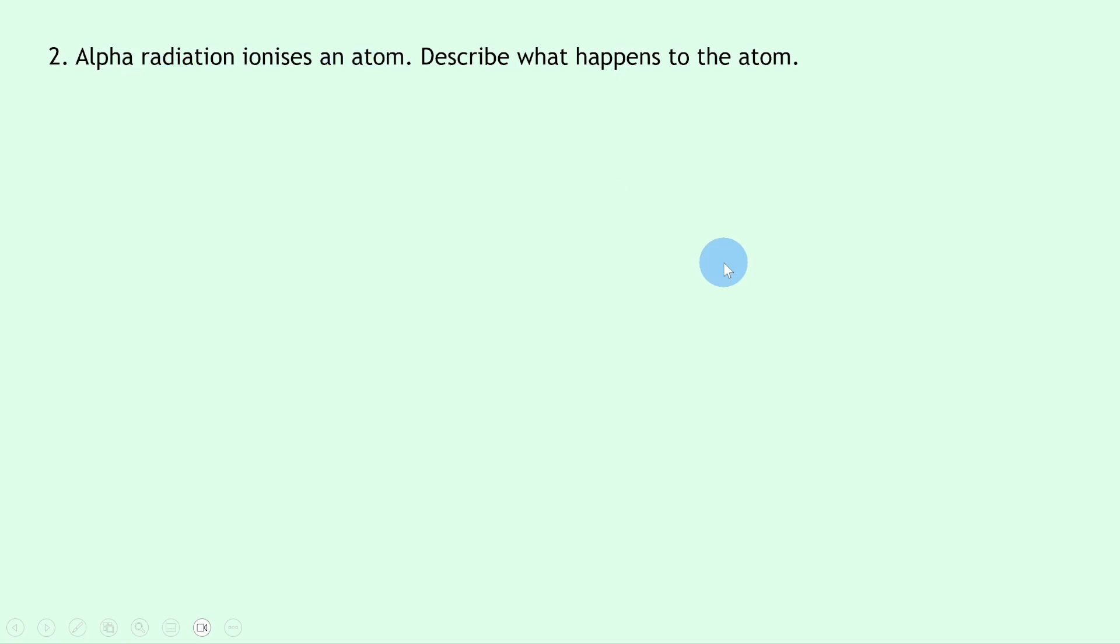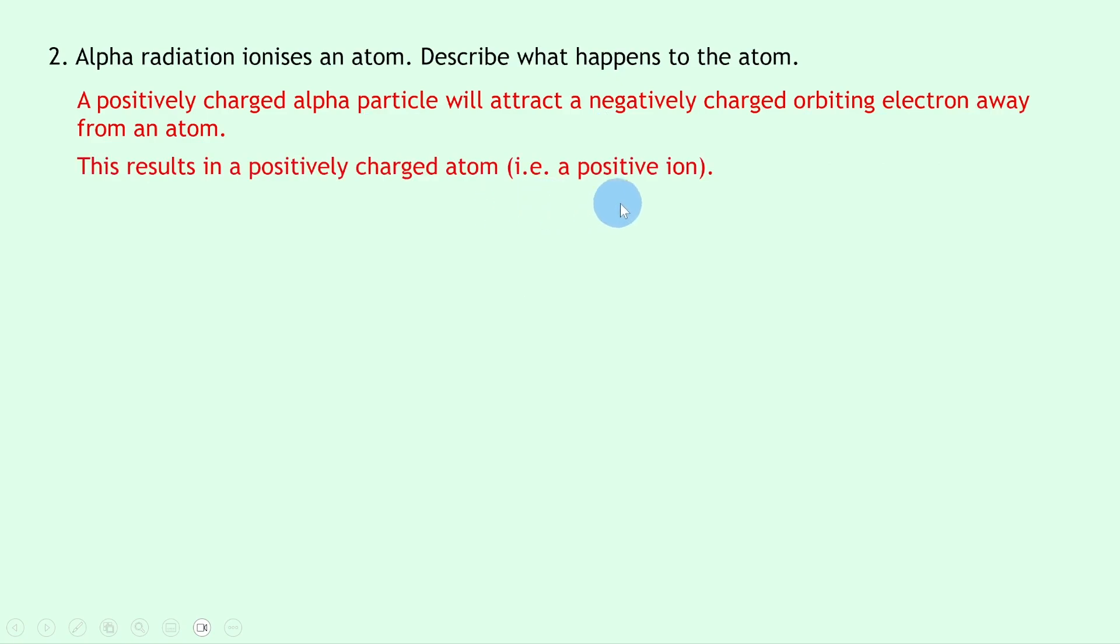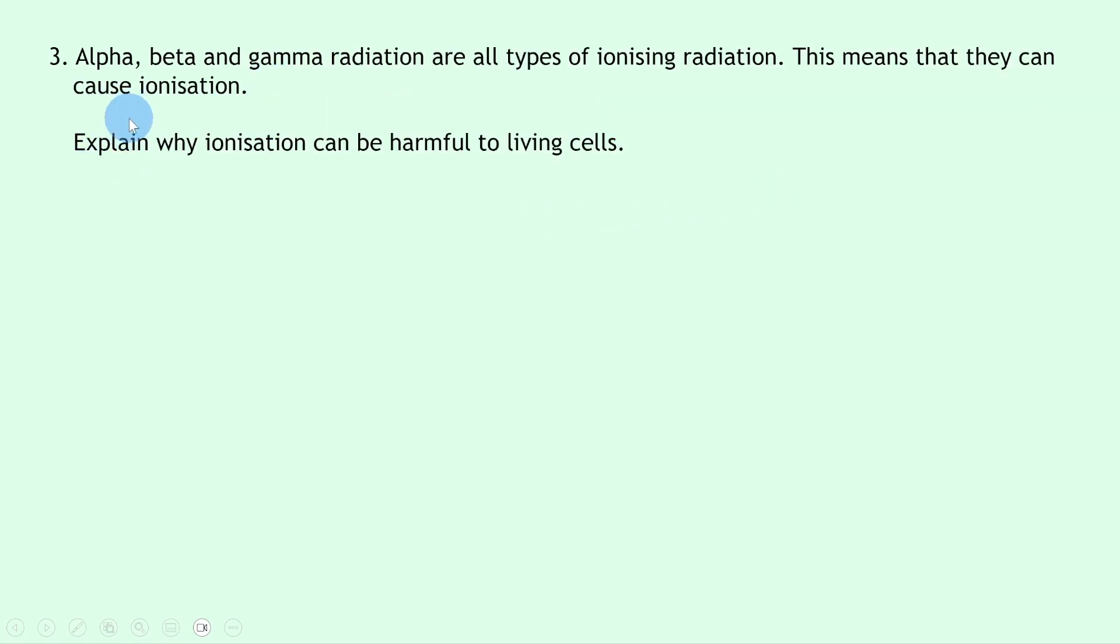We could say that a positively charged alpha particle will attract a negatively charged orbiting electron away from an atom. This results in a positively charged atom, i.e., a positive ion.